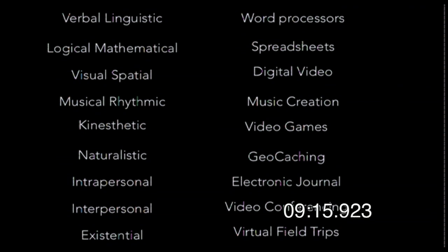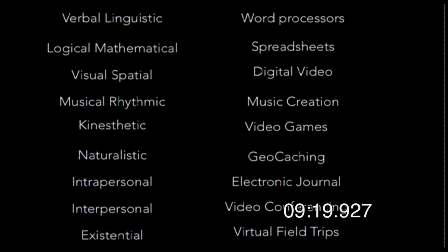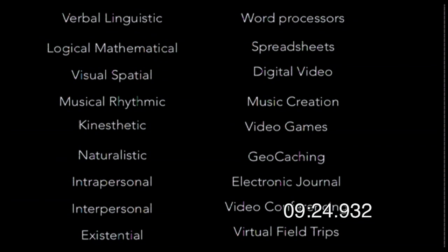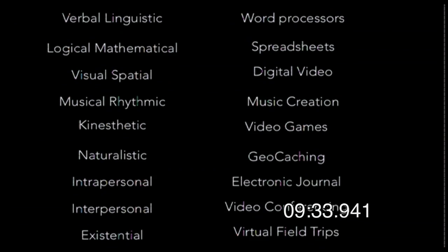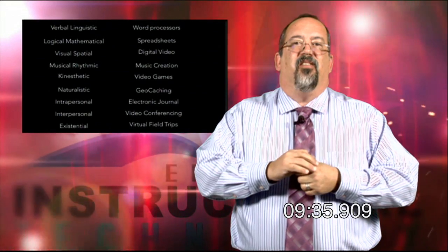So to recap: verbal linguistic learners — word processing; logical mathematical — spreadsheets; visual spatial — digital video; musical rhythmic — some kind of music creation tool; kinesthetic — video games; naturalistic — geocaching and mapping tools; intrapersonal — electronic journals; interpersonal — video conferencing; existential — virtual field trips or simulations. That's 10 ways to match technology to multiple intelligences. Thanks for joining me — we made it within our 10 minutes. See you next time on 10 in 10!